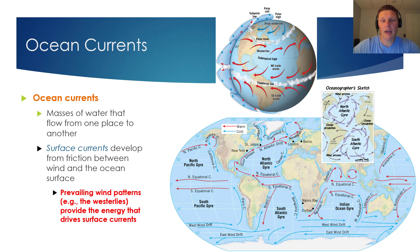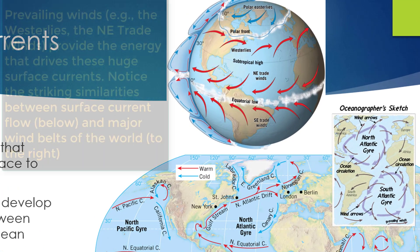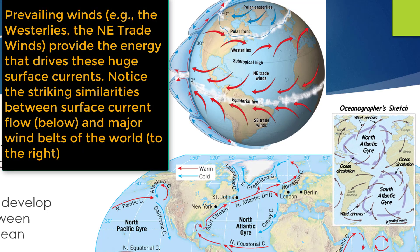You might be wondering what we mean when we say prevailing winds. The image shown towards the top portion of this slide overviews some of the prevailing winds that we'll learn about in a future vodcast. But as an example of how winds provide the energy that drives ocean currents, let's focus on the westerlies, which occur between the latitudes of 30 degrees and 60 degrees.